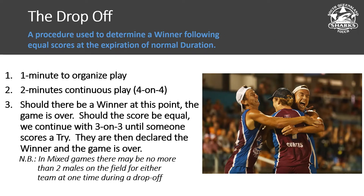The drop-off is a procedure used to determine a winner following equal scores at the expiration of normal duration — meaning we reach the end of a finals game with the scores tied. The referee puts their hand up and waits for confirmation of a drop-off. Teams have one minute to organise. In mixed, it's four versus four with no more than two males on the field per team at any time. We play two minutes continuous; if there's a winner, the game is over. If scores are still equal, we continue three on three until someone scores a try, and that team is declared the winner.